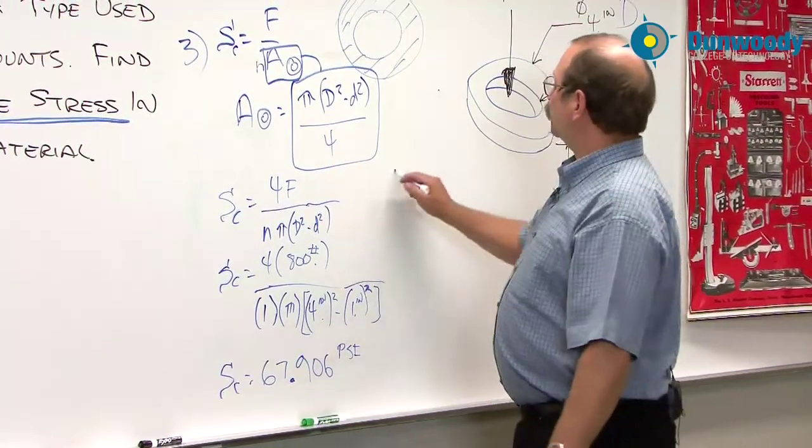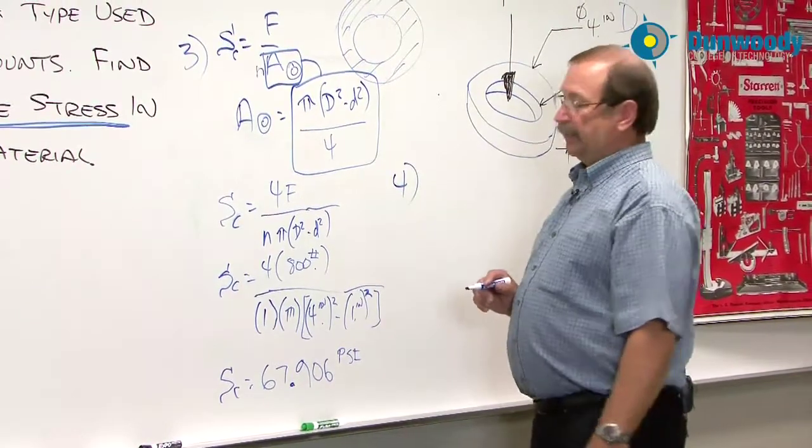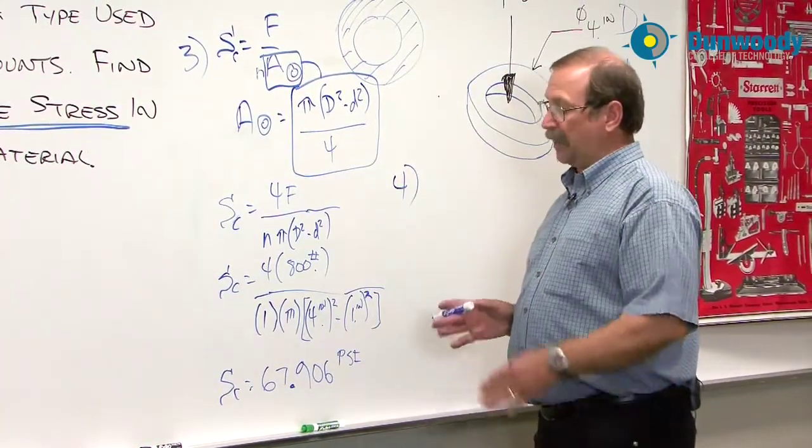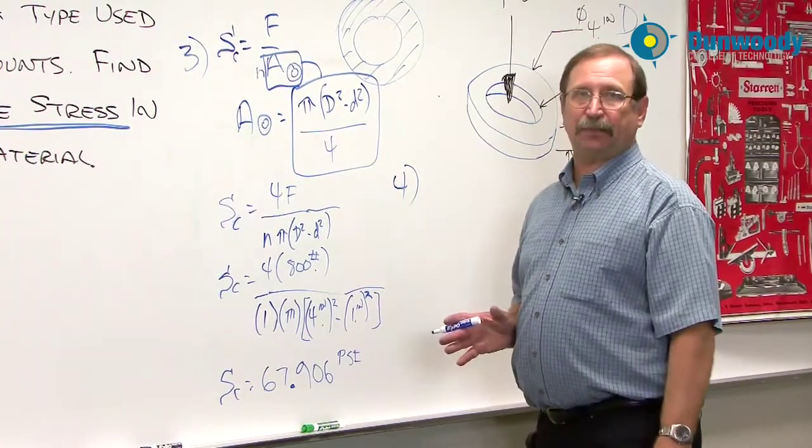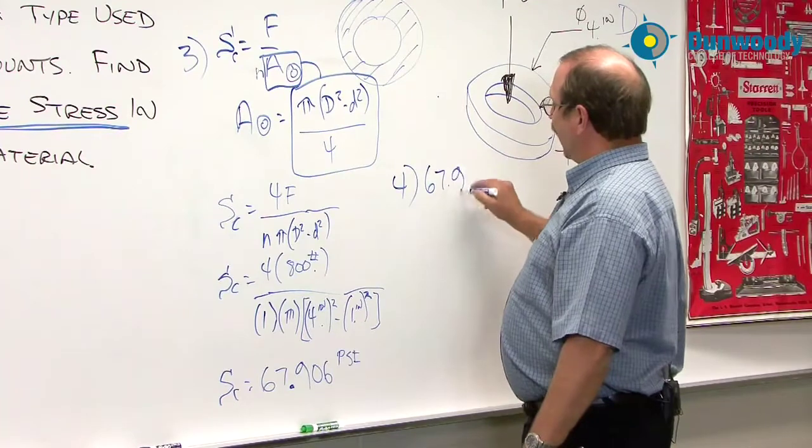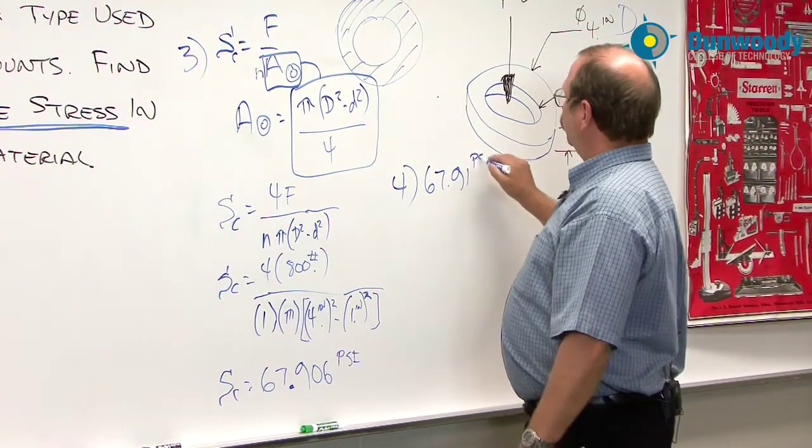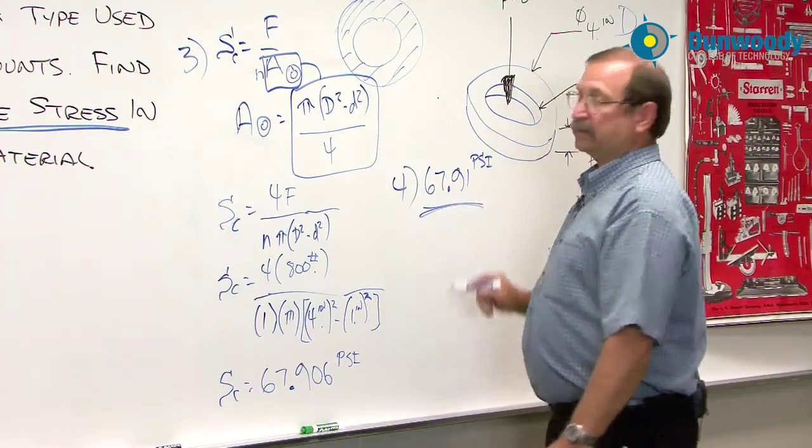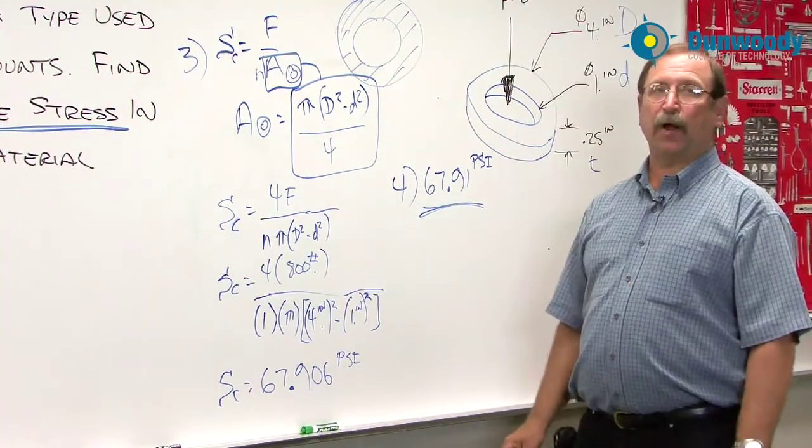So our fourth step is to take a look at the conclusion. And what we would do here again as in the past is try and figure out how many decimal places does it make sense. So we're going to have 67.91 PSI. Two decimal places is fine for this type of a problem.